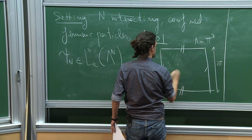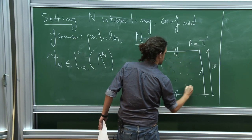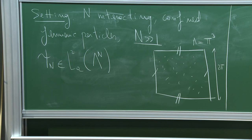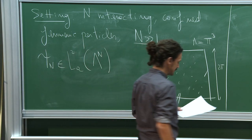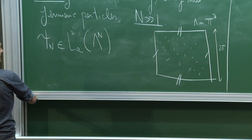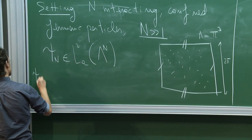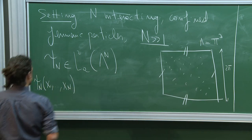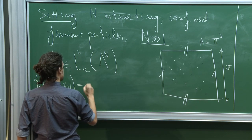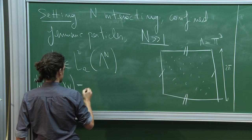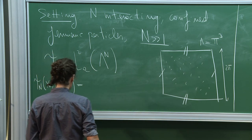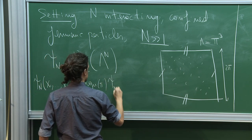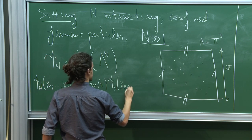Think of that as being populated by N particles. The typical distance between two particles is N^{-1/3}, so it's a very high-density regime. Antisymmetric means that if you permute the labels of the particles, you pick up the sign of the permutation.